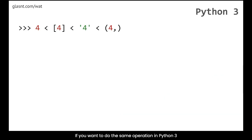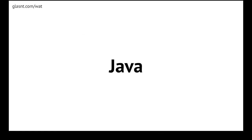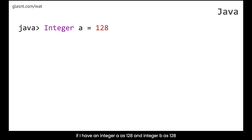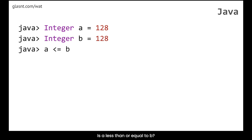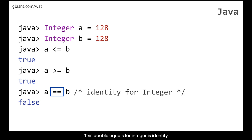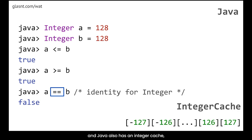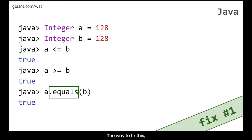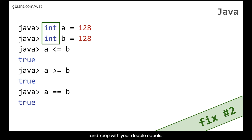Let's talk about Java. In Java, if I have an integer A is 128 and integer B is 128, is A less than or equal to B? True. Is A greater than or equal to B? True. So A equals B, right? No. This is because in Java, double equals for Integer is identity, and Java also has an integer cache — but this time going from negative 127 to positive 127. Declaring a value outside that cache gives the same issues we saw in Python. The fix: if working with the complex Integer type, use .equals(), or drop down to the simple int type and keep double equals.